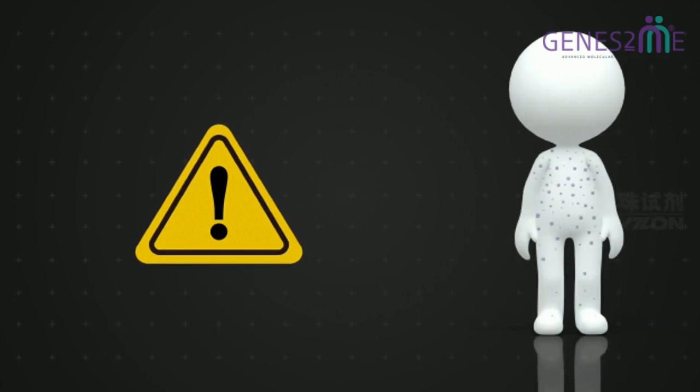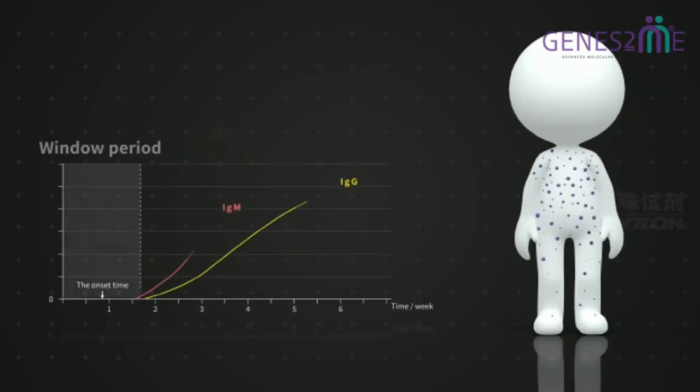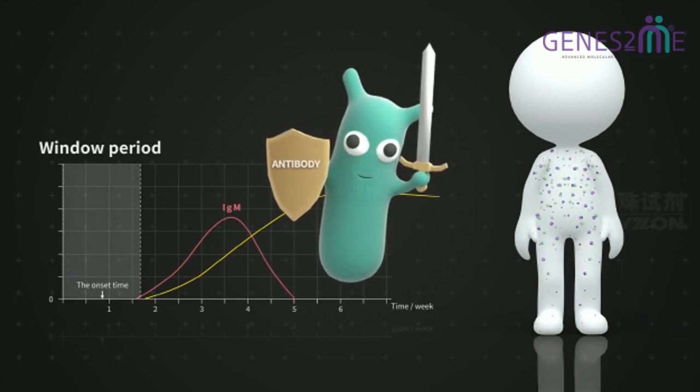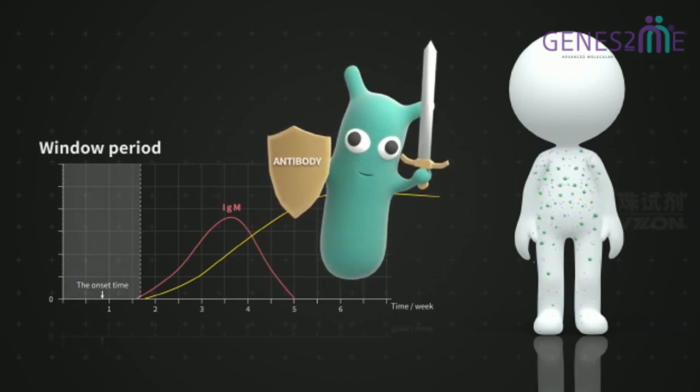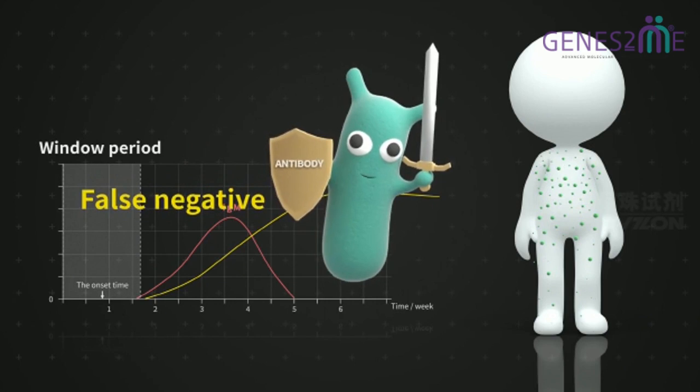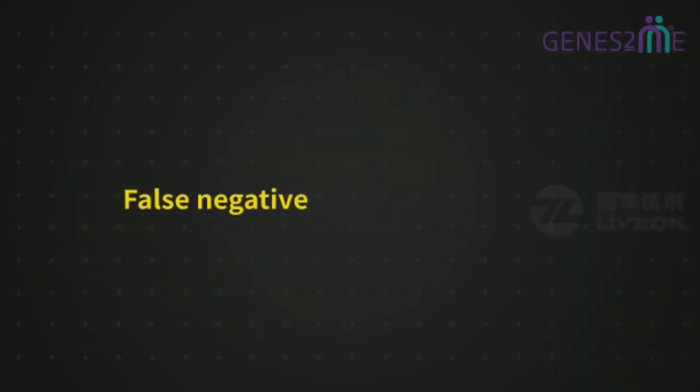There's a gap between the date of infection and that of antibody appearance, which is called window period. So negative results of antibody testing in this period cannot exclude the possibility of infection. Meanwhile, antibody testing may be interfered with various factors. Very few cases of false positive results cannot be avoided. Therefore, it's important to keep a consecutive testing of antibodies.